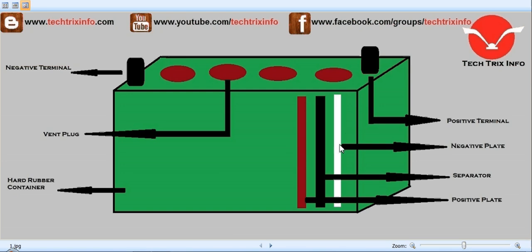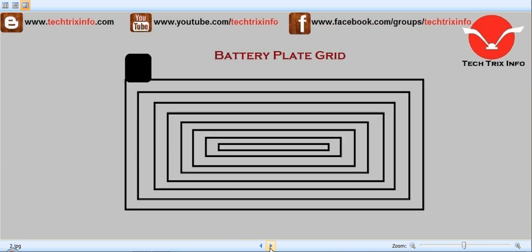and the negative plates in white, and the separator in black, which is deep inside this electrolyte. Let's learn about each of these components in detail. This is the battery plate grid. These plates are actually rectangular in shape and made of a lattice-like grid, molded from lead-antimony alloy.